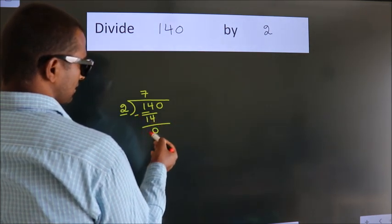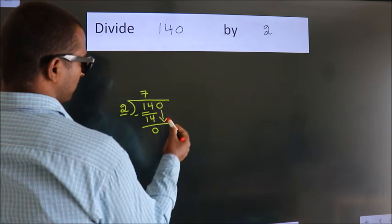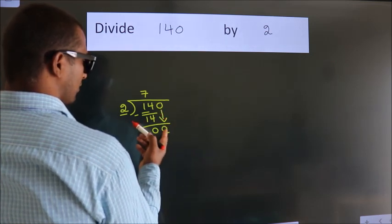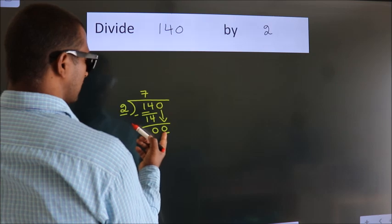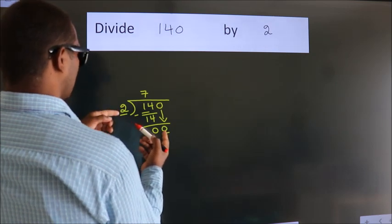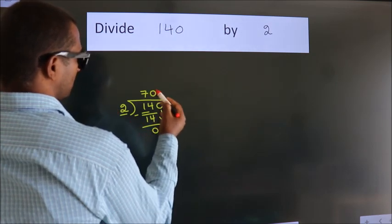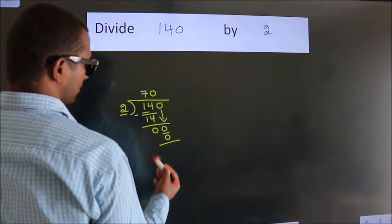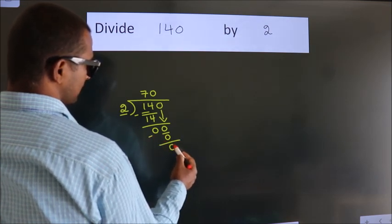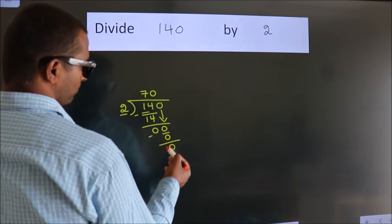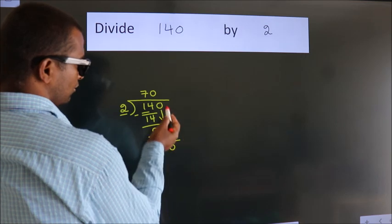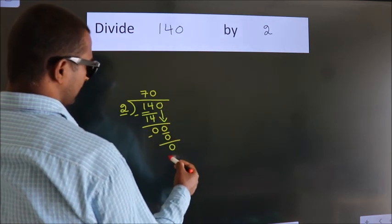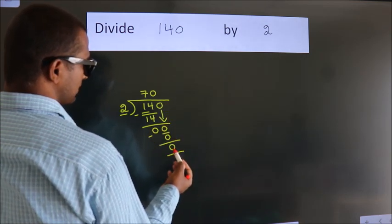After this, bring down the beside number. So bring 0 down. When do we get 0? In the 2 times table — 2 times 0 is 0. Now we subtract. We get 0. After this, no more numbers to bring down, and we got remainder 0.